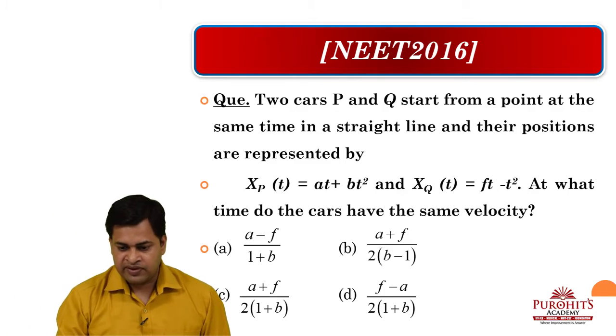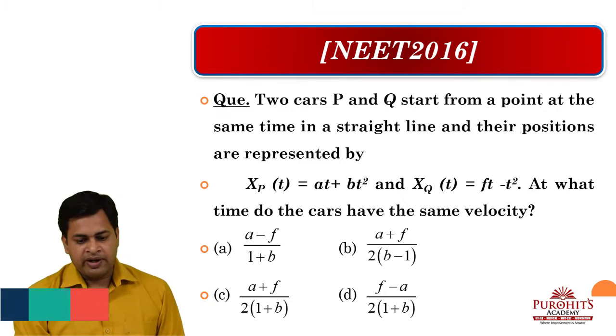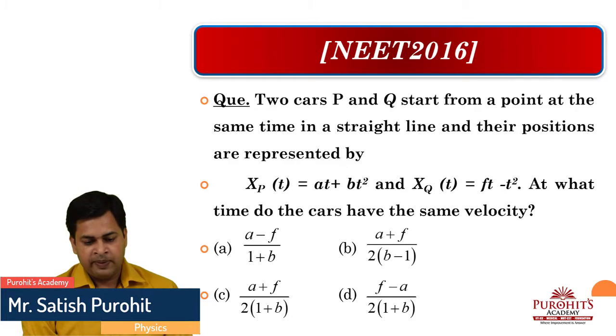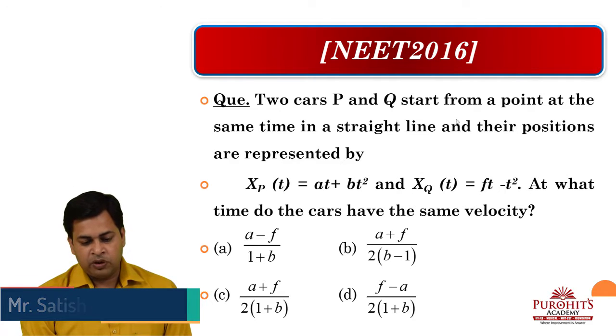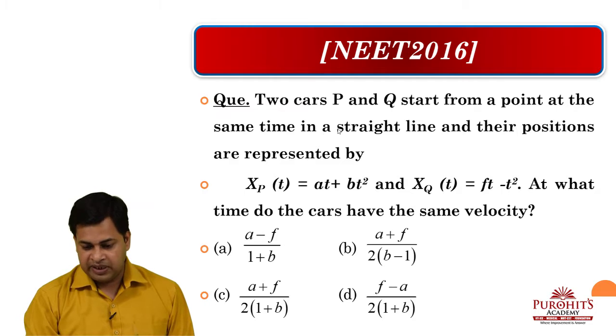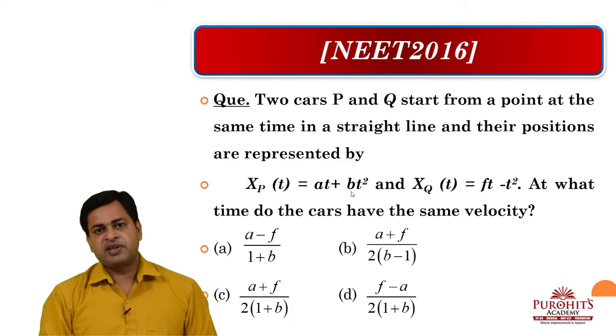Welcome students. NEET 2016 question: Two cars P and Q start from a point at the same time in a straight line, and their positions are represented by Xp(t) = at + bt² and Xq(t) = ft - t². At what time do the cars have the same velocity?